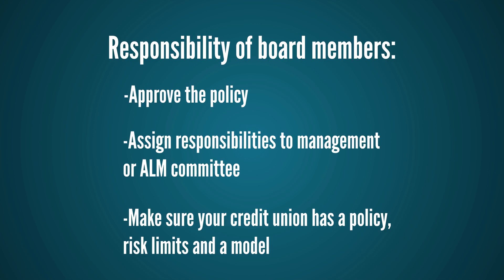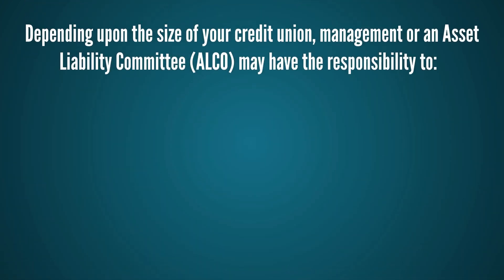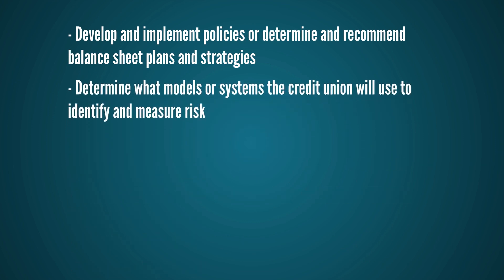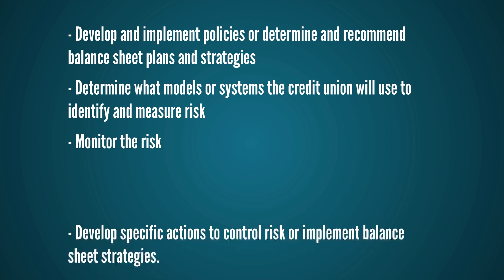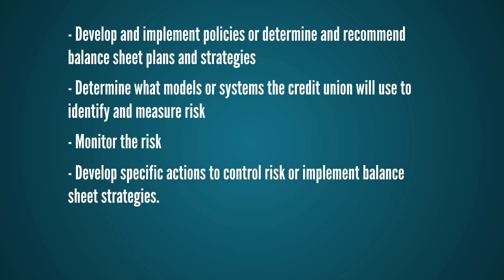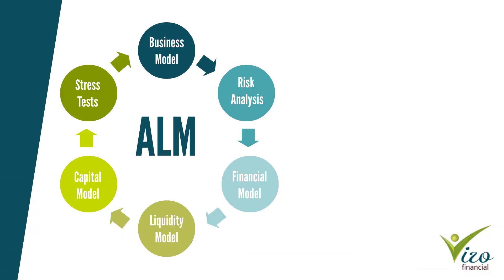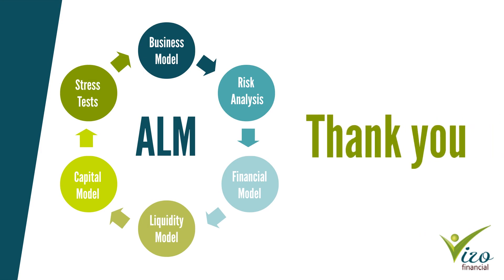You should monitor the risk the credit union takes based upon reports provided to you at board meetings. Depending upon the size of your credit union, management or an asset liability committee may have the responsibility to develop and implement policies, determine and recommend balance sheet plans and strategies, determine what models or systems the credit union will use to identify and measure risk, monitor the risk, develop specific actions to control risk or implement balance sheet strategies, and communicate through reporting to the board. This concludes the introduction to asset liability management. Thank you for watching and have a wonderful day.